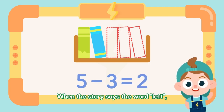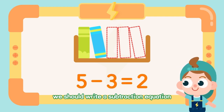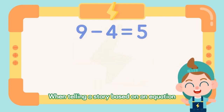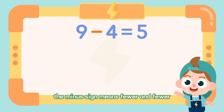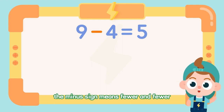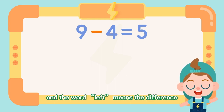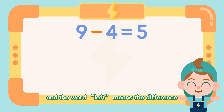When the story says the word 'left', we should write a subtraction equation. When telling a story based on an equation, the minus sign means fewer and fewer, and the word 'left' means the difference.